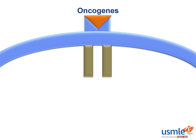Here we have a growth factor and a receptor. Increased activity of your growth factors will lead to increased growth of your cells. A specific growth factor oncogene that increases your chance of astrocytomas is platelet-derived growth factor — if you said that, you would be correct.